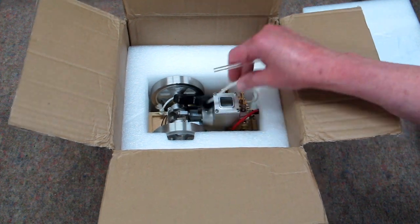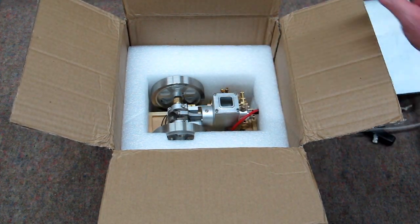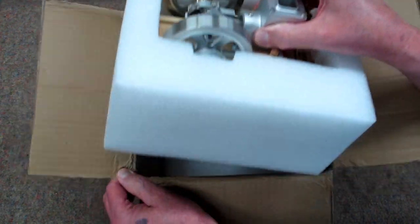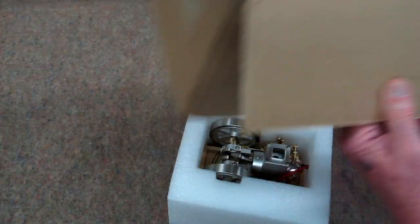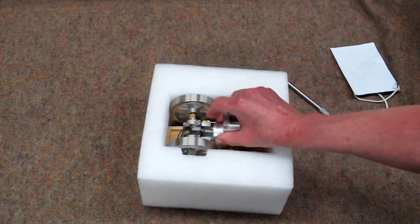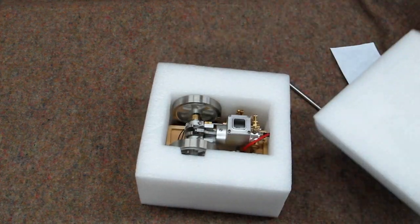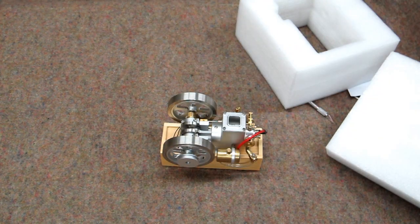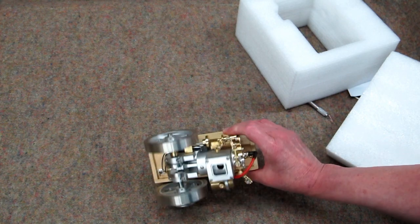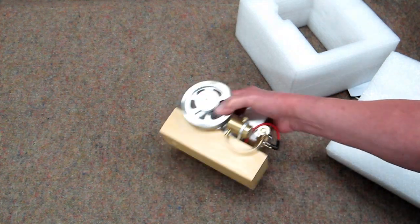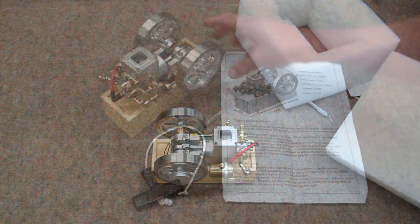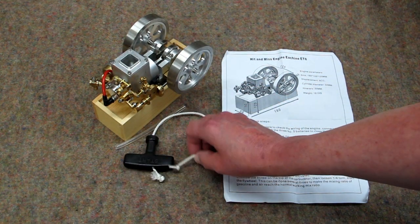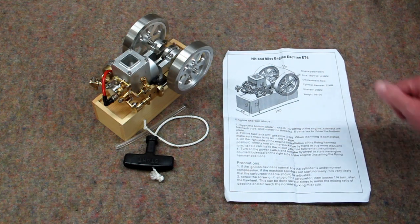Some fuel line, starter rope. And there's a thick layer of foam on top and bottom of this. And this is perfect. Nothing wrong with that. So we have the engine, a piece of spare fuel line, a rope starter, and the instruction sheet.